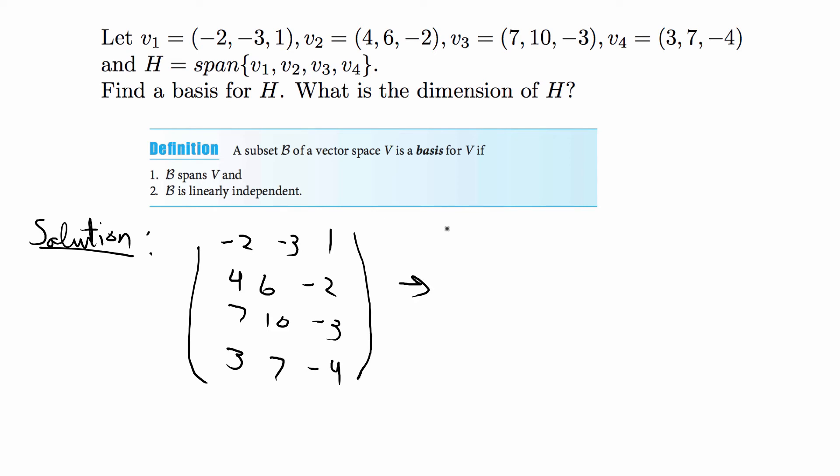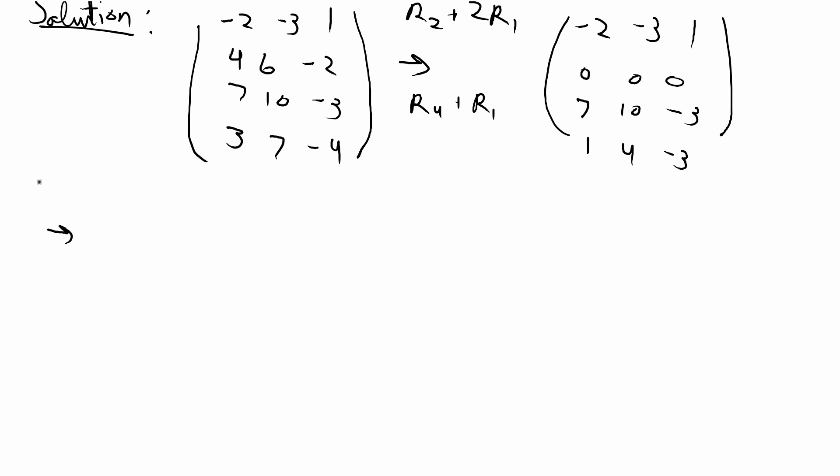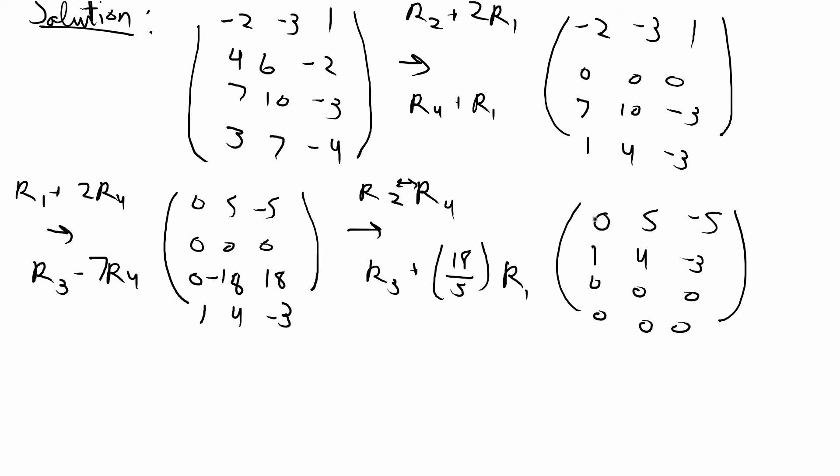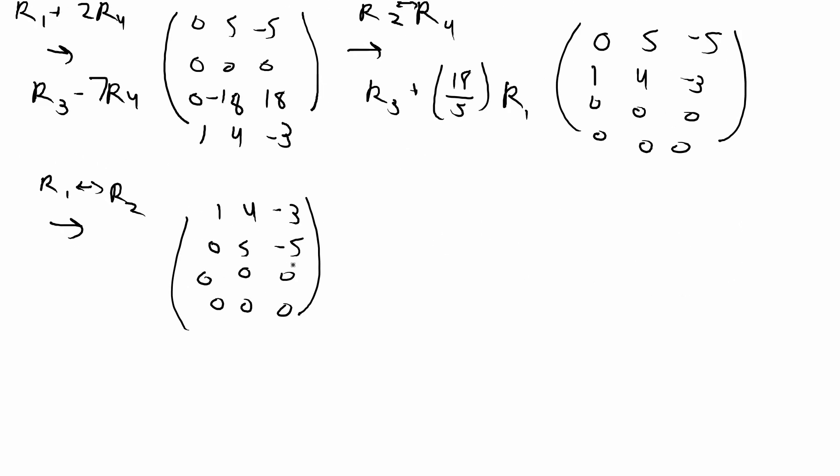It's basically row echelon form and then the leading coefficients have to be 1. So I'm going to do r2 plus 2r1, r4 plus r1 to get that matrix. And then I'm going to do r1 plus 2r4 and r3 minus 7r4. And then I'm going to switch row 2 and row 4 and I'm going to do r3 plus 18 over 5 r1. And then I'm going to switch row 1 and row 2 and that gives that matrix.